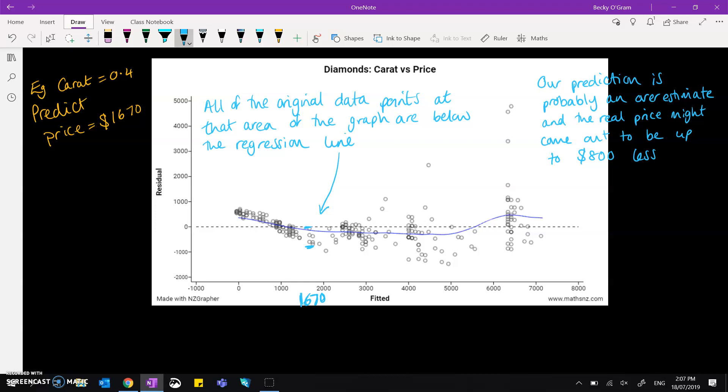If we picked something that was sitting fairly in the middle of the data, so for example say we'd come out with a prediction of a price that came to just over six thousand dollars, maybe somewhere up here, then that is sitting quite nicely in between the main bulk of the data. It's fairly central.